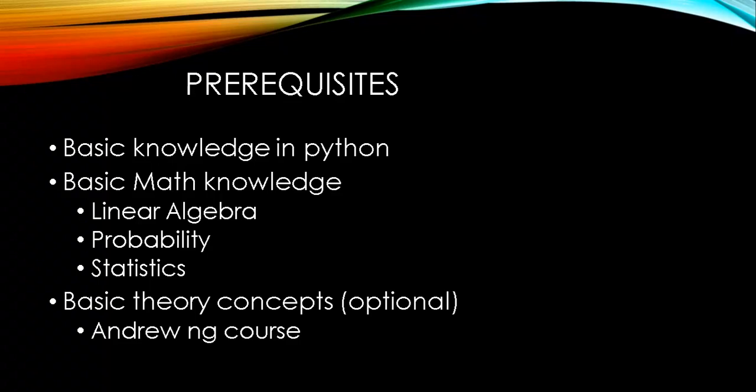And the third one is basic theory concepts. It is also optional. I'm going to explain some concepts on the way while coding. If you want to know the complete theory about machine learning and deep learning with the mathematical concepts, you can refer Andrew NG's course. It is available in YouTube and Coursera. In YouTube, the channel name is deeplearning.ai.